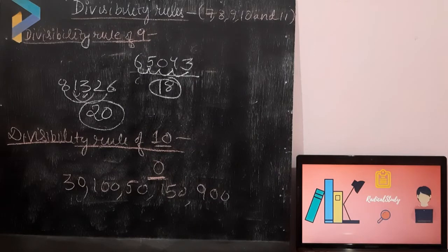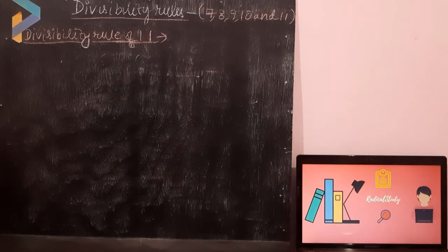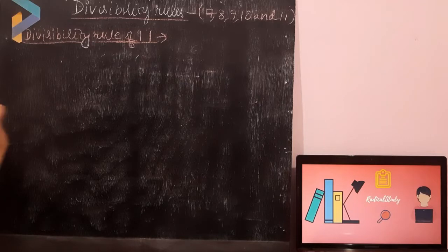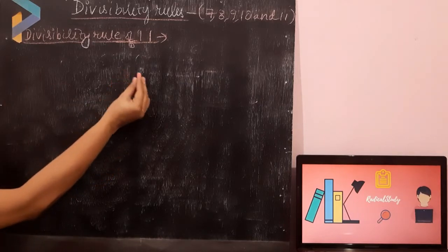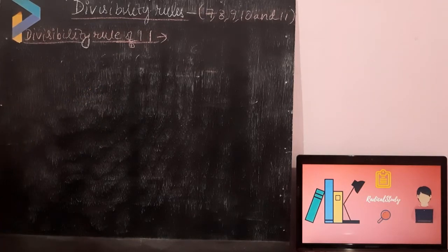Now I am going to explain the rule of 11. How will you check the divisibility of any number by 11? A number is divisible by 11 if the difference of the sum of its digits in odd places and the sum of its digits in even places, starting from the 1's place, is either 0 or a multiple of 11. This rule is quite similar to the rule of 7, but the situation is slightly different.